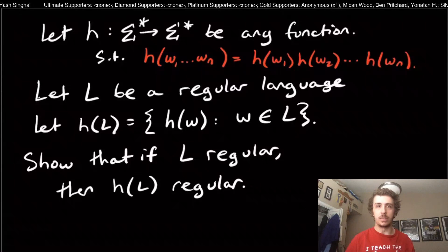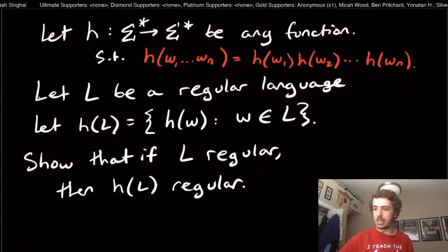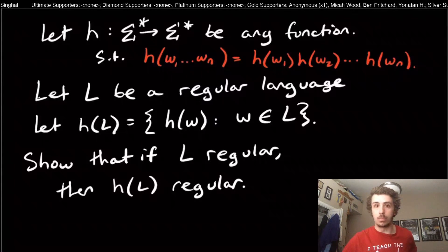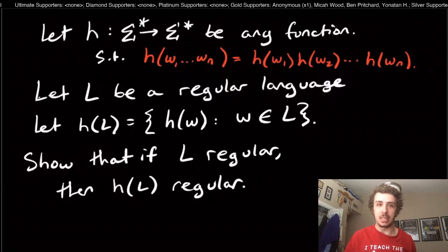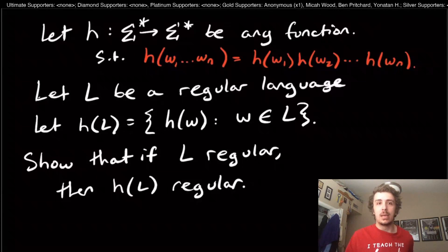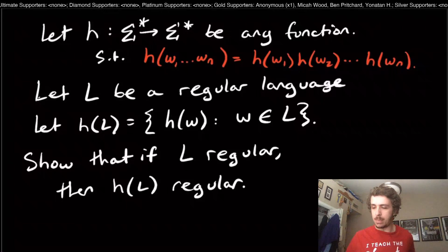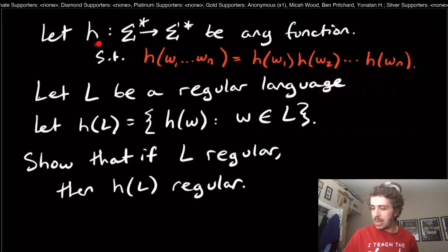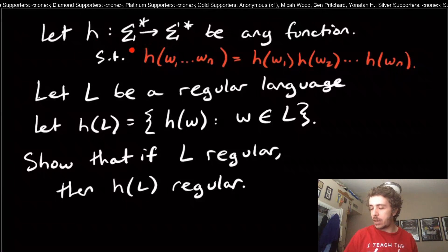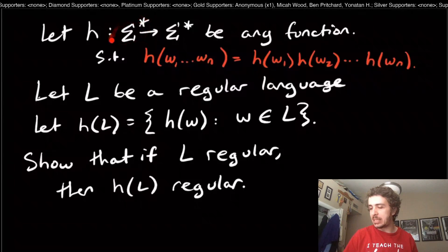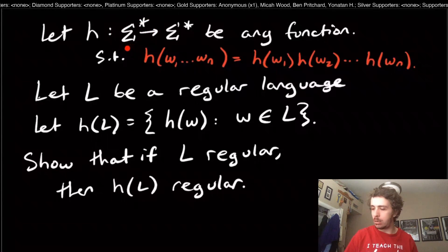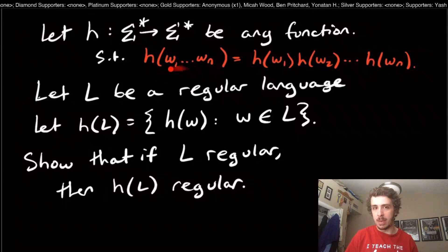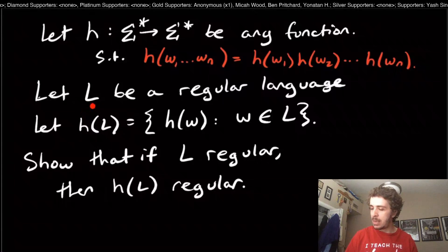Welcome back to another edition of Easy Theory. Today we're going to look at another closure property which is one I get asked about a lot, because the definition is actually quite hard to understand for a lot of people. We're going to let H be any function that takes a string — remember Sigma-star is all strings — from any string to any string with a particular property we'll talk about in a second.